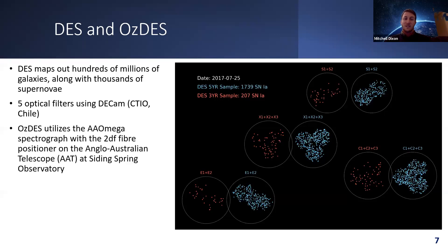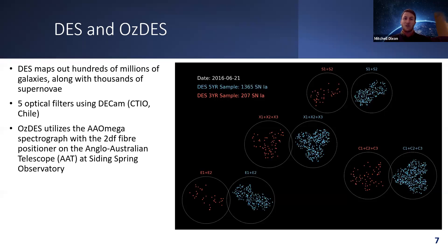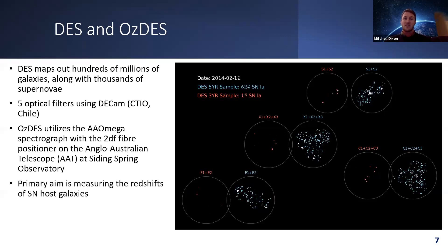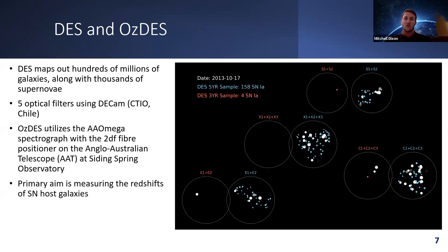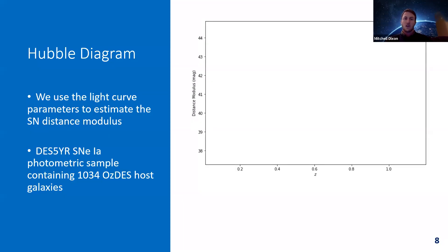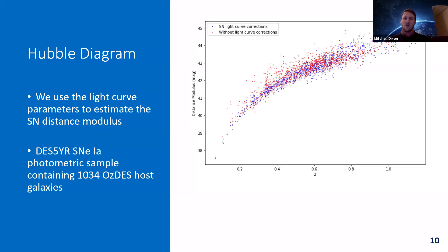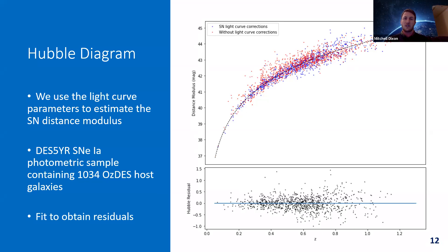OzDES operates at Siding Spring Observatory in New South Wales at the AAT, and is a useful follow-up survey to DES — measuring the spectroscopic redshift of galaxies hosting supernova transients, and importantly obtaining a spectrum for our analysis. From our DES five-year sample, after necessary cuts, we get around 1034 OzDES host galaxies. We apply light curve fitting parameters to estimate observed distance moduli, then fit our data to obtain Hubble residuals for each object.